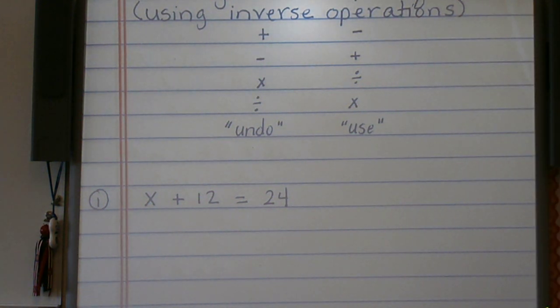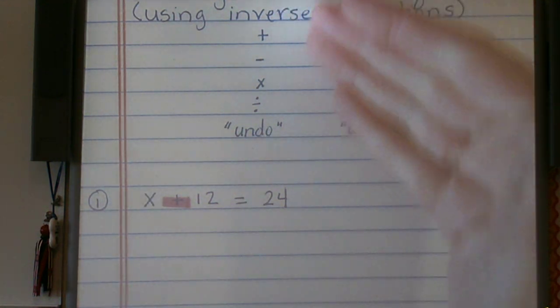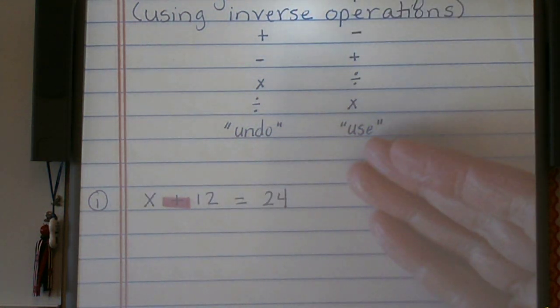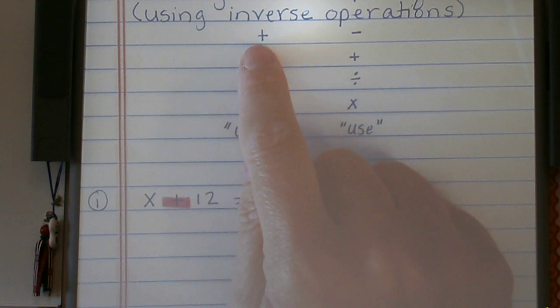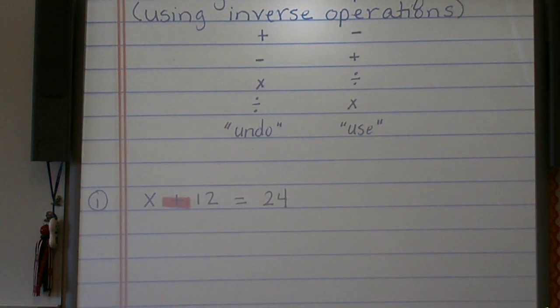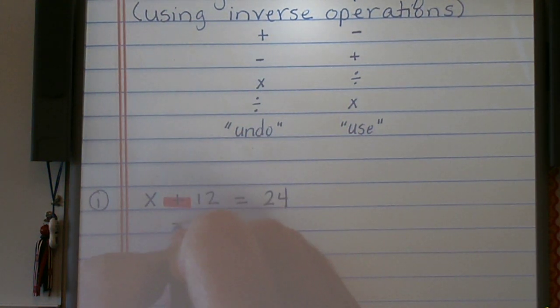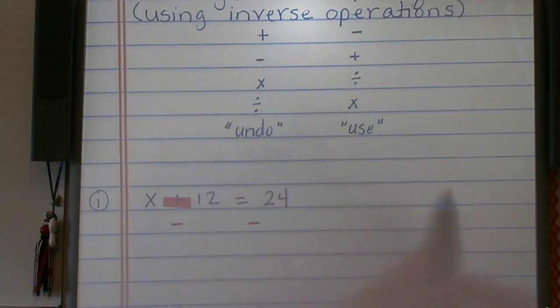So we have x plus 12 equals 24. The operation that we're using right now is addition. If I look back to my inverse operations, undo and use, I will see that if I want to undo addition, I have to use subtraction.